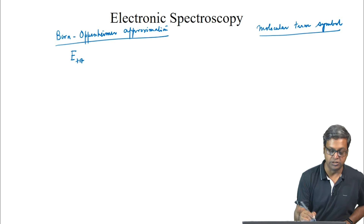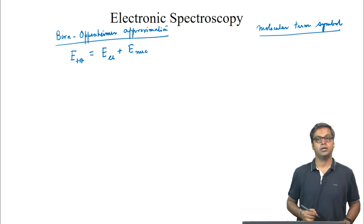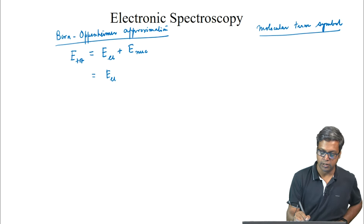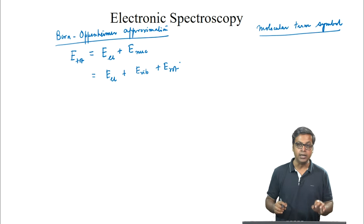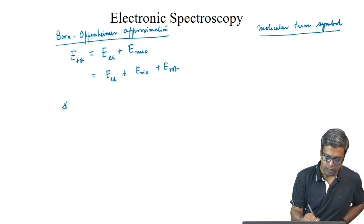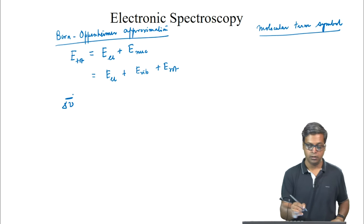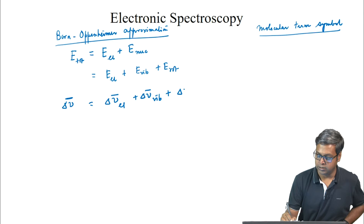As we have seen before, we can write the total energy E_total as E_electronic plus E_nuclear, and further we can write this as E_electronic plus E_vibrational plus E_rotational. This implies that the electronic, vibrational, and rotational energies of a molecule are completely independent of one another. However, this approximation is not fully valid. In wave number units, we can write the difference in energy as delta-nu-bar equals delta-nu-bar_electronic plus delta-nu-bar_vibrational plus delta-nu-bar_rotational.